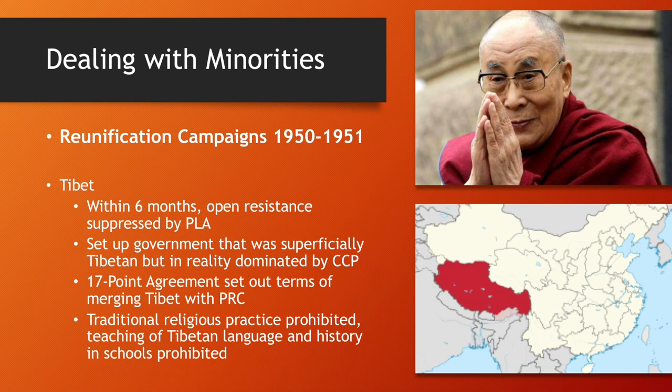The Dalai Lama represented a rival leader for Mao and the communists, and Mao was not going to tolerate that — he was going to be the sole authority within China, not any religious leaders. The Dalai Lama's role within Tibet was therefore significantly hindered.